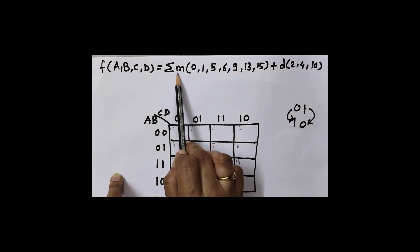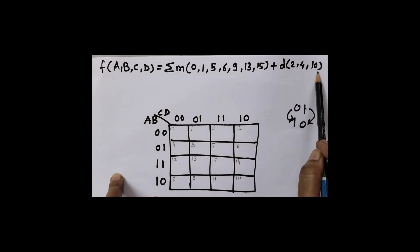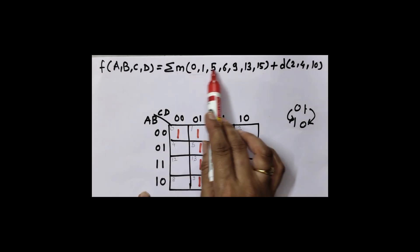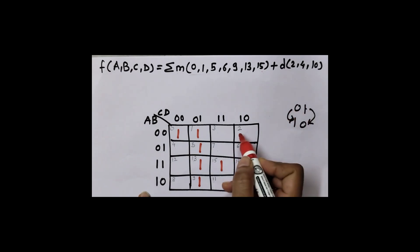Which terms are given? Min terms are given. It means for these terms we must insert 1 in these cells. And for don't care conditions we insert cross. So for 0 I will write 1, for 1 I will write 1, 5 is 1, 6 is 1, 9 is 1, 13 is 1, 15 is 1. For these min terms I have inserted 1. Then for don't care conditions I will insert cross: 2 cross, 4 cross, and 10 also cross. For remaining cells I must insert 0s.